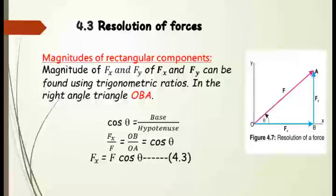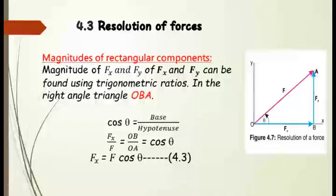OB equals fx, meaning OB is the x component of force. By putting these values into the trigonometric ratio, we get: fx divided by F equals cos theta. So the final equation is fx = F cos theta. This is the equation to find the magnitude of the x component or horizontal component of force.